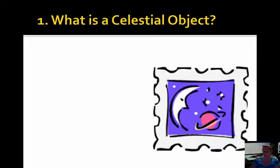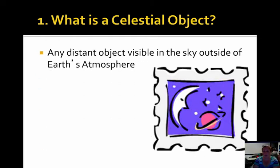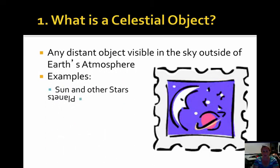The first thing we need to know is some of the names for objects that are in space. The first object is called a celestial object. A celestial object is anything that's outside of Earth's atmosphere, anything we see in the sky that's not part of Earth. Some examples would be the sun and other stars, planets, and moons.